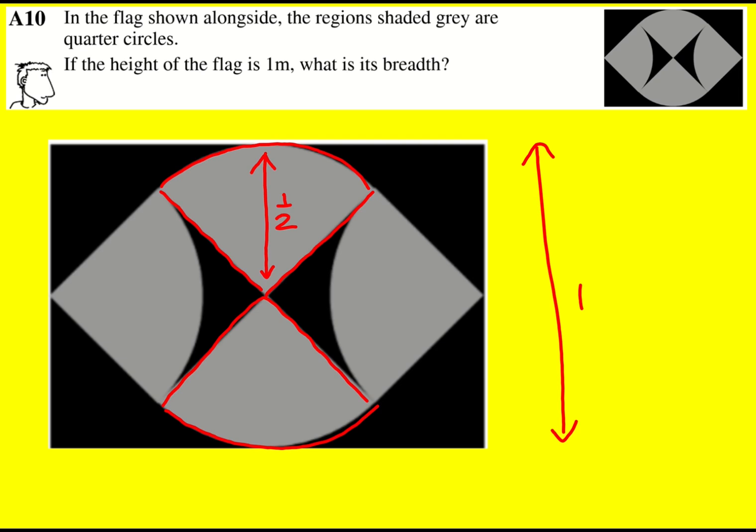And what that means is that this length here in blue is also a half, and I can construct this square with lengths of a half, which I can turn into a right-angled triangle.